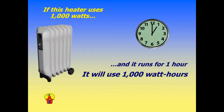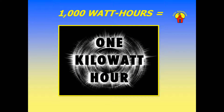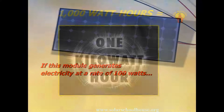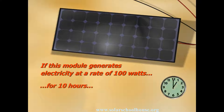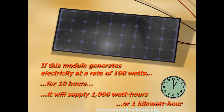If this heater uses 1000 watts and it runs for one hour, then it will use 1000 watts times one hour, or 1000 watt hours. 1000 watt hours is also called one kilowatt hour. Kilo means 1000, so 1000 watt hours equals one kilowatt hour. If this solar module generates electricity at a rate of 100 watts for 10 hours, then it will supply 1000 watt hours, or one kilowatt hour.